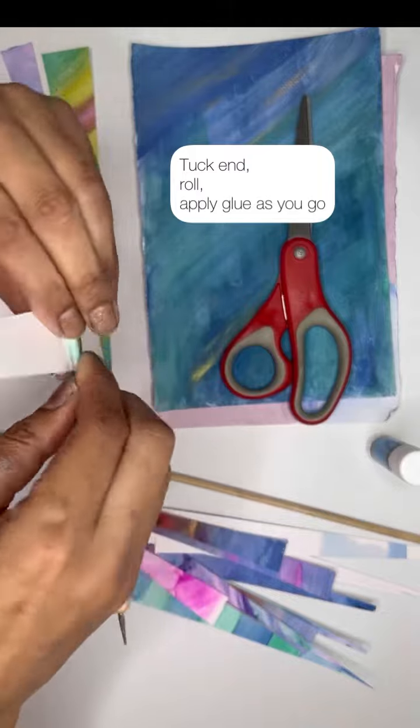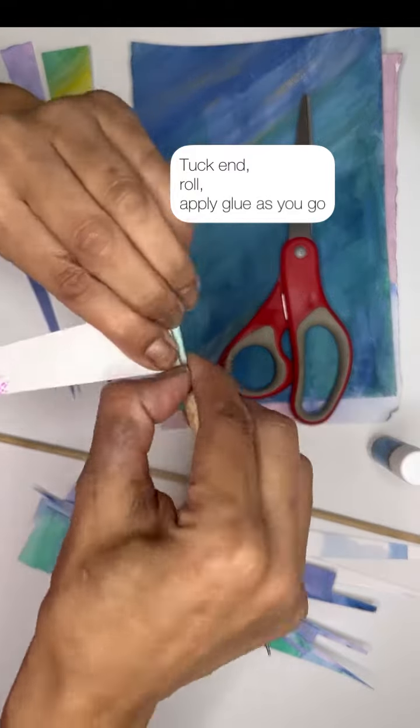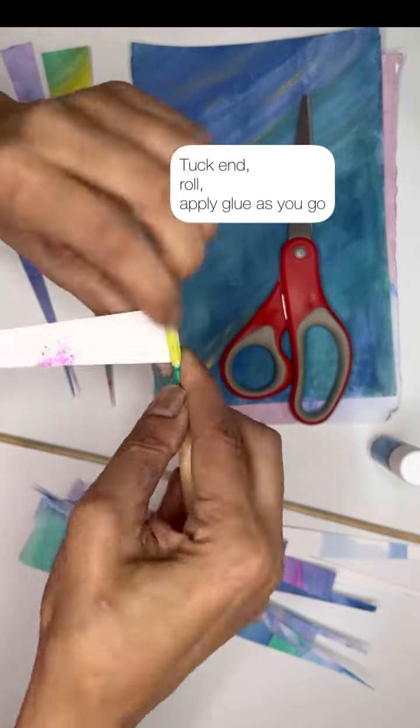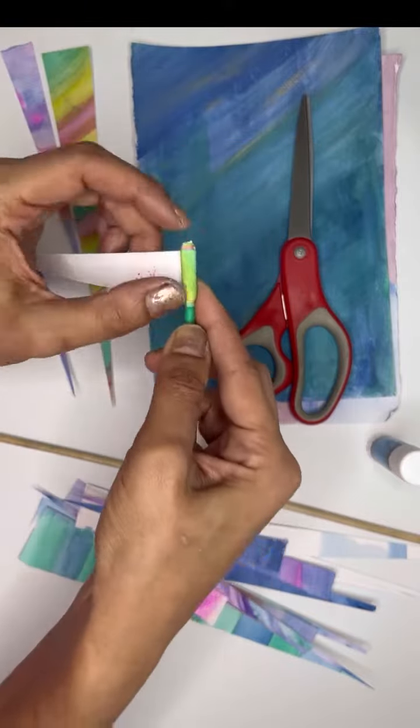So you're going to want to roll the very end and get that tucked under really good. That's the fiddliest bit for me.